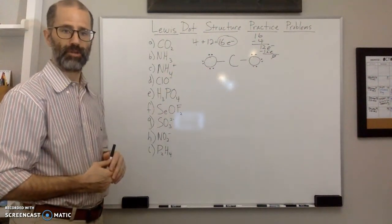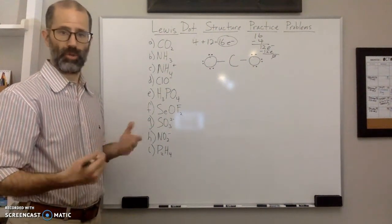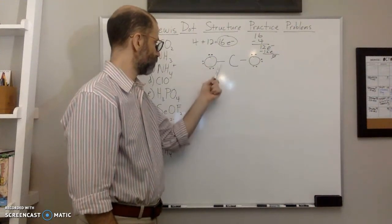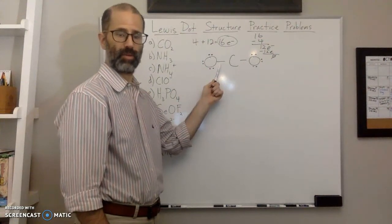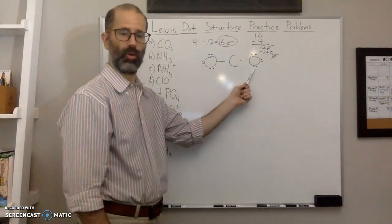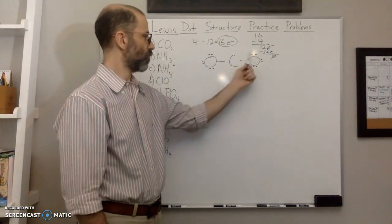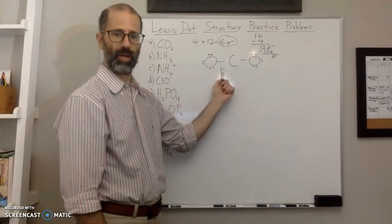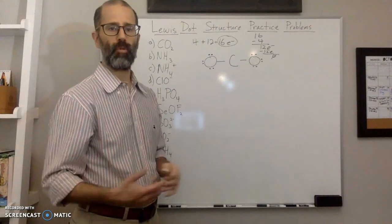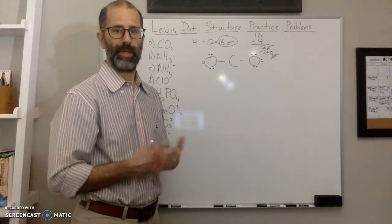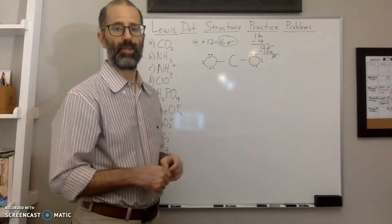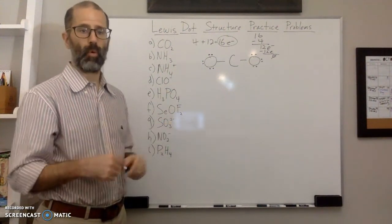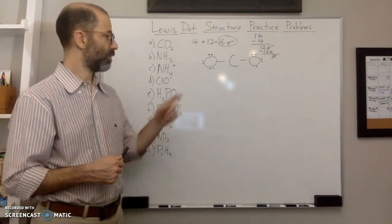Now I need to double-check my Lewis dot structure and make sure everyone has an octet or a duet. Each oxygen has three lone pairs plus one bonding pair — that's eight. Carbon, however, only has one bond on each side, so it's sharing two electrons in each bond — that's just four. It needs four more electrons, and I don't have any to give, so I need to move electrons: I need to move lone pair electrons from the outer atoms to create more bonds shared with the central atom.